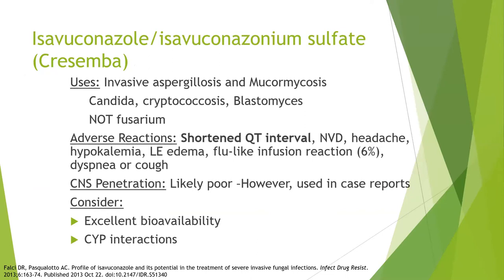Isavuconazole is used for treatment of invasive aspergillosis and mucormycosis. It can be used for candida, cryptococcosis, and blastomycosis, but does not have activity against fusarium. Unlike the other azoles, it can shorten the QT interval — a special distinguishing effect. Side effects include nausea, vomiting, diarrhea, headache, hypokalemia, lower extremity edema, and about 6% of patients get a flu-like reaction. It has poor CNS penetration but has been used in case reports. It has excellent bioavailability and we watch for CYP interactions.